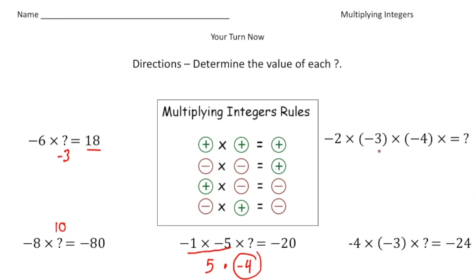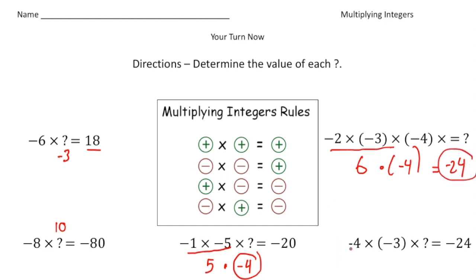Here we have negative two times negative three times negative four. Negative two times negative three is positive six, and positive six times negative four — a positive times a negative — gives us negative 24. Finally, negative four times negative three times question mark equals negative 24. Negative four times negative three is 12, and since we need negative 24, the answer is negative two, because 12 times negative two equals negative 24.